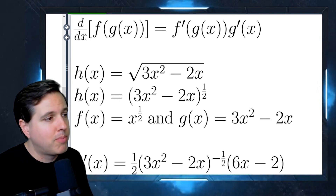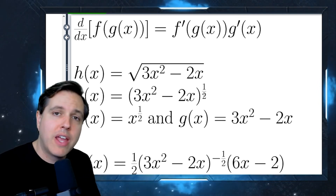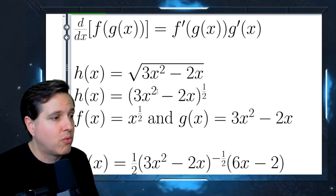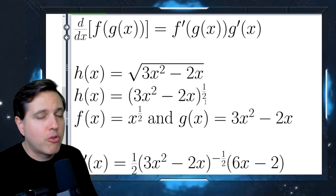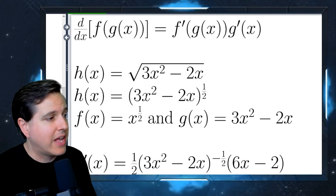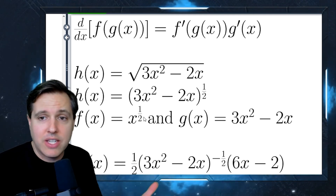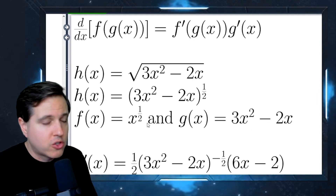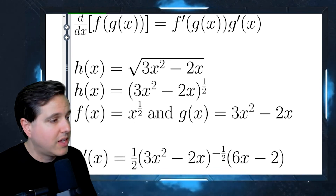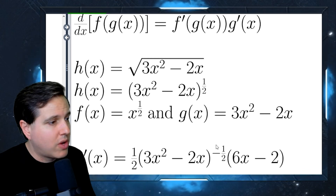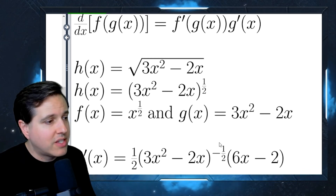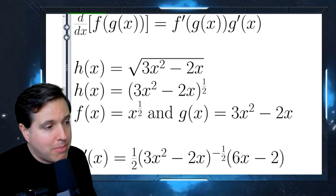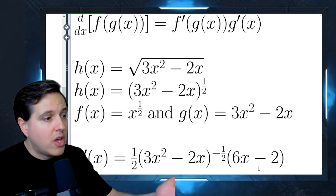We think of this as a polynomial raised to a rational exponent. The inner function g(x) is what's in the parentheses — (3x² - 2x) — the part you evaluate first. The outer function f(x) is raising to the one-half power. From there, f prime of g(x) brings the one-half down in front and decreases the exponent by one, making it negative one-half, while g(x) stays the same. Then we multiply by g prime of x, which is 6x - 2.